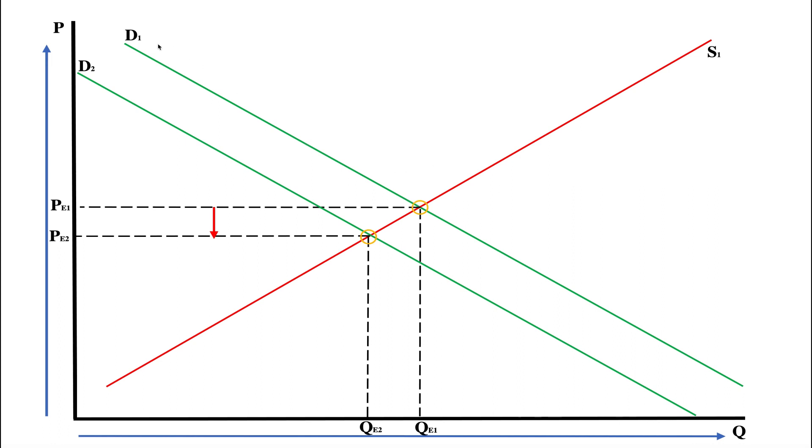And so what you can see here is we have D1 and S1, which stand for the original supply and demand curves. Now what happens when we see D2 here is demand decreasing relative to supply. You can see it shifting along the supply curve to the downside.